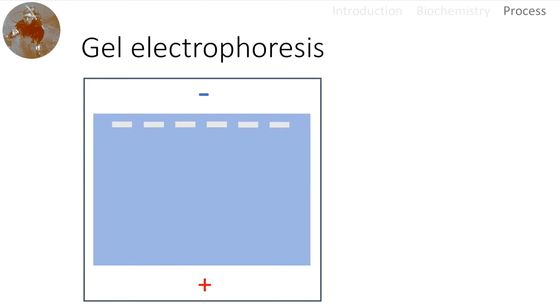So here we have a gel chamber and we already have the gel which was poured before. We can see we have a negative charge on top and a positive charge below called cathode and anode.